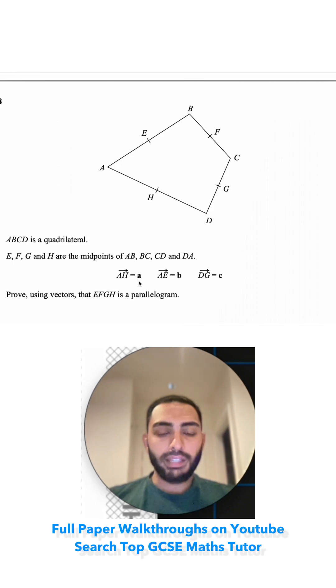They're halfway along these lines. A to H is A, so we can write that vector as A, and we know this is the midpoint, so there to there will also be A.